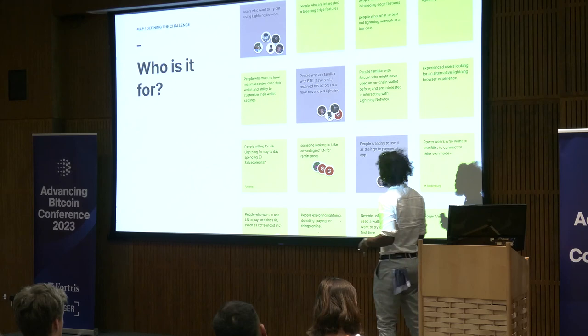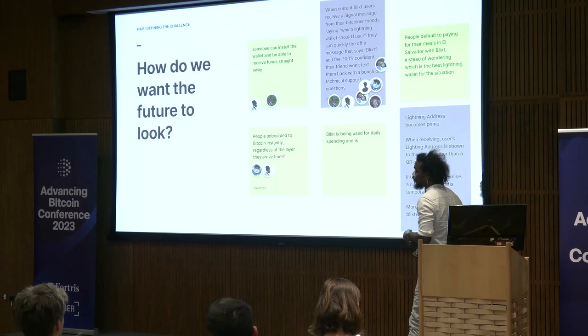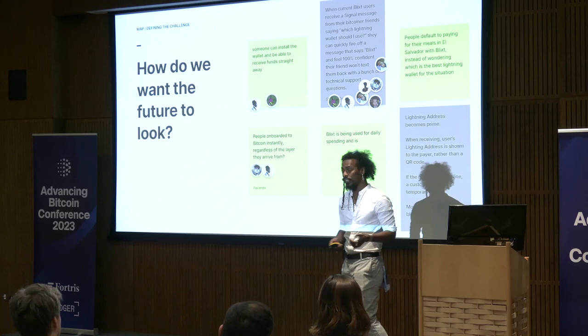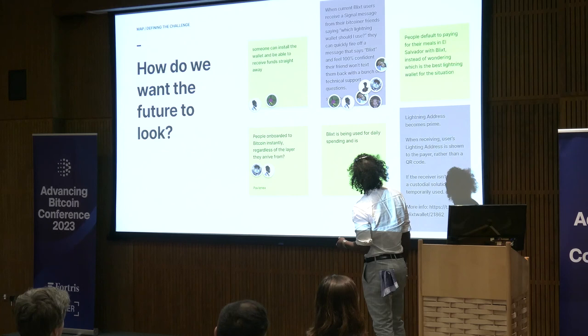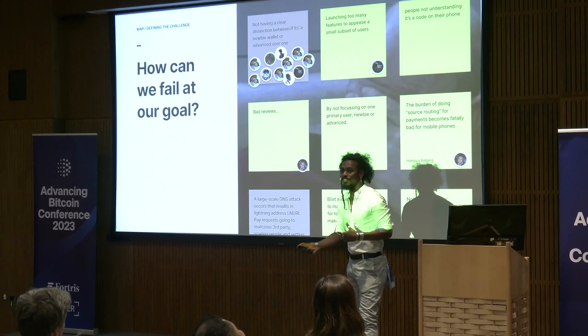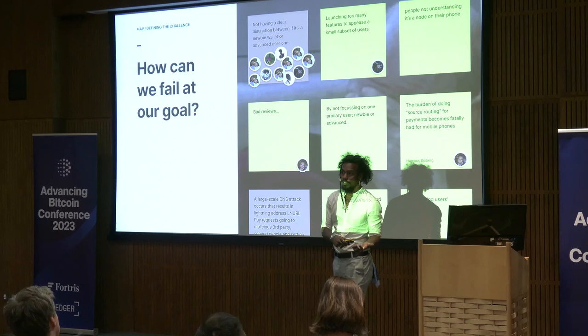Another activity is: how do we want the future to look? This covers long-term goals — one year, five years, ten years' time. What do we want people to gain from this experience? How will we measure the success of this feature or project? We put down some long-term goals and use voting. It's also important to understand how things feel — not just the happy paths, but what negative outcomes can result, so we can design defensively.